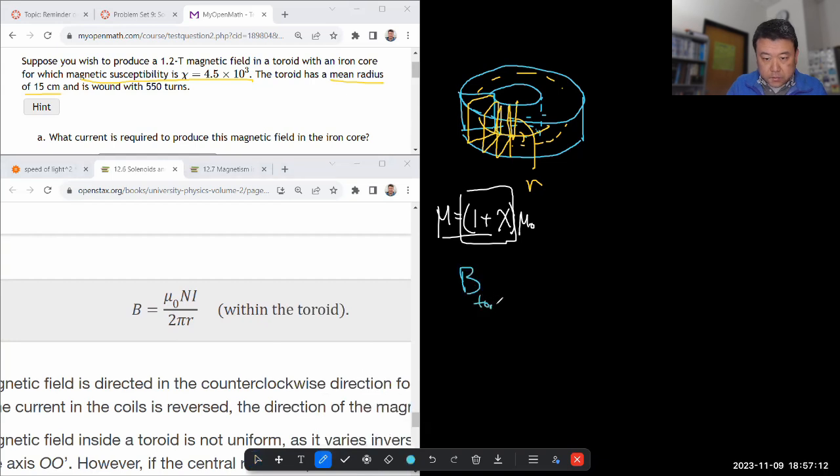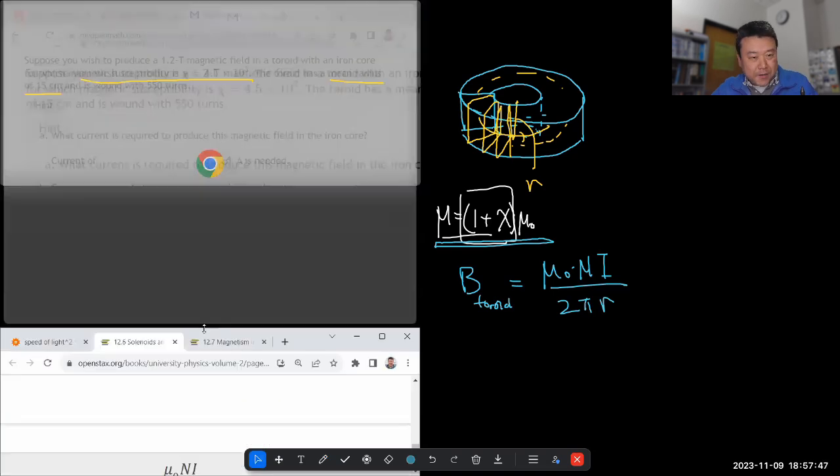So magnetic field inside the toroid is not constant, unlike solenoid. So let me copy over that formula. The magnetic field of toroid is equal to mu naught times n i, where n is the total number of turns, divided by 2 pi r. And for this question, I'll just stick with this.